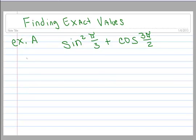Here's an example of finding an exact value, and you're going to want your unit circle with you. This says the sine of pi over 3 squared plus the cosine of 3 pi over 2. What is its exact value?